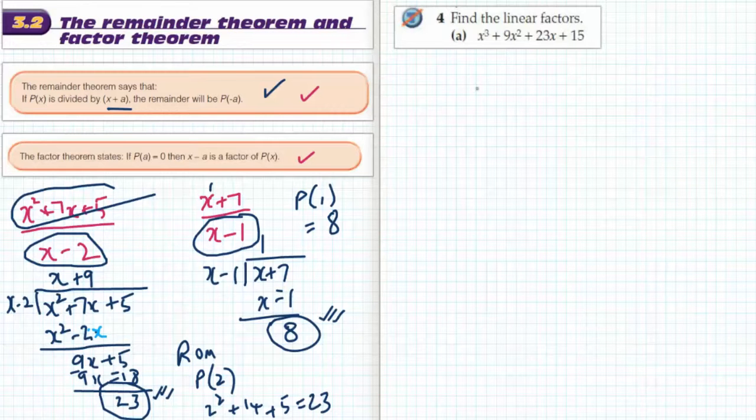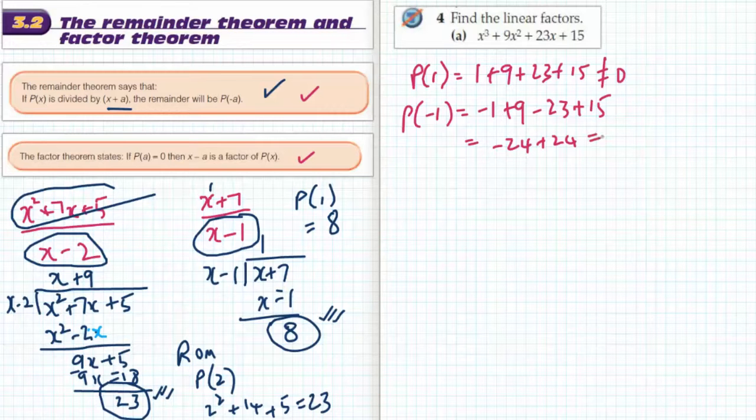And once I find a factor, I then get into a division. So if I use P of 1, that's not going to be much good because all of these are positive. That will be 1 plus 9 plus 23 plus 15, and that certainly doesn't equal 0. What's the point in putting in positive numbers? If I use P of negative 1, that's going to be negative 1, because negative 1 cubed is negative 1, plus 9 minus 23 plus 15, which is negative 24 plus 24, which equals 0.